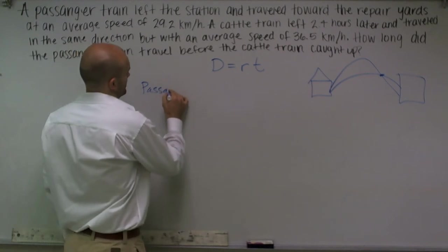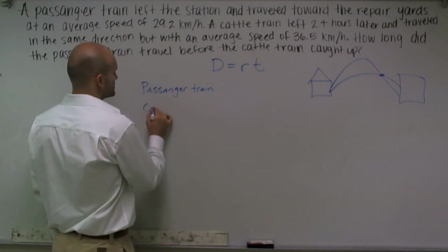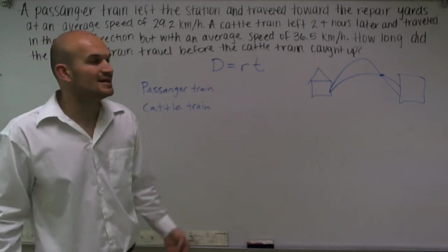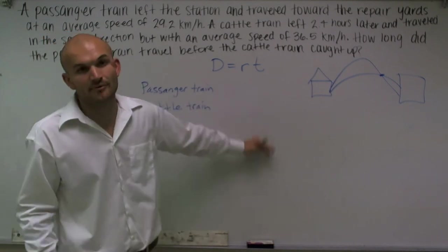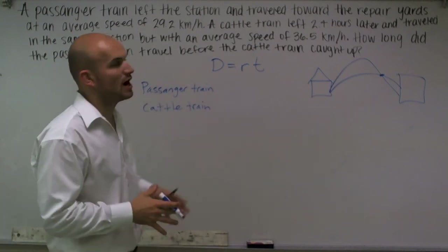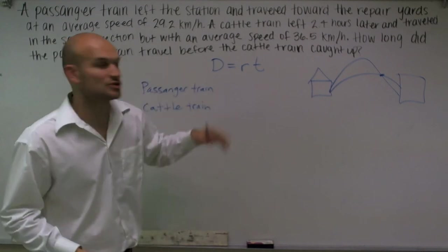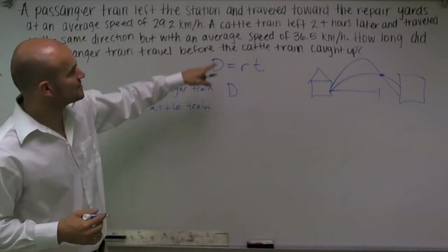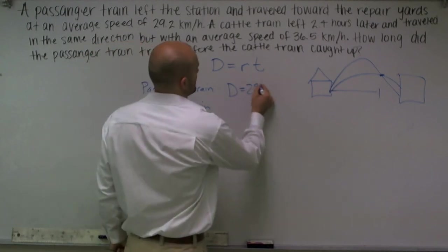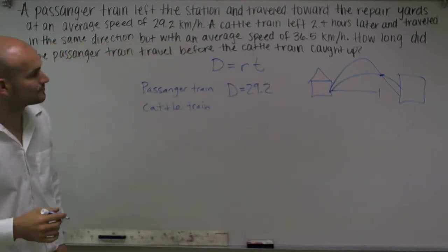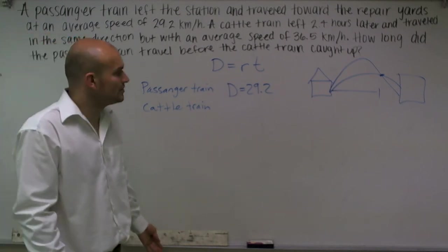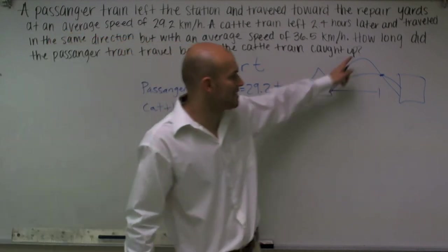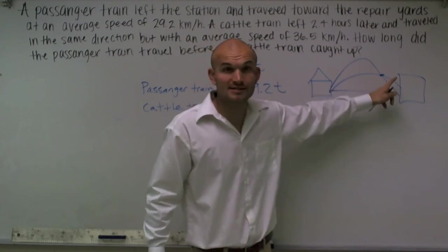So the next thing we're going to do is I'm going to organize all of this. So we know there's a passenger train and we also know there's a cattle train. Now what I'm going to use is I'm going to do the distance equals rate times time to set up my information for both of these. So the distance, we don't know how far they traveled. We don't know the distance that they traveled when they met up, so we have an unknown of D. Then the passenger train said it traveled at 29.2 kilometers per hour. And then the time, but we don't know exactly what the time is. So again, we have another unknown variable, which is T.